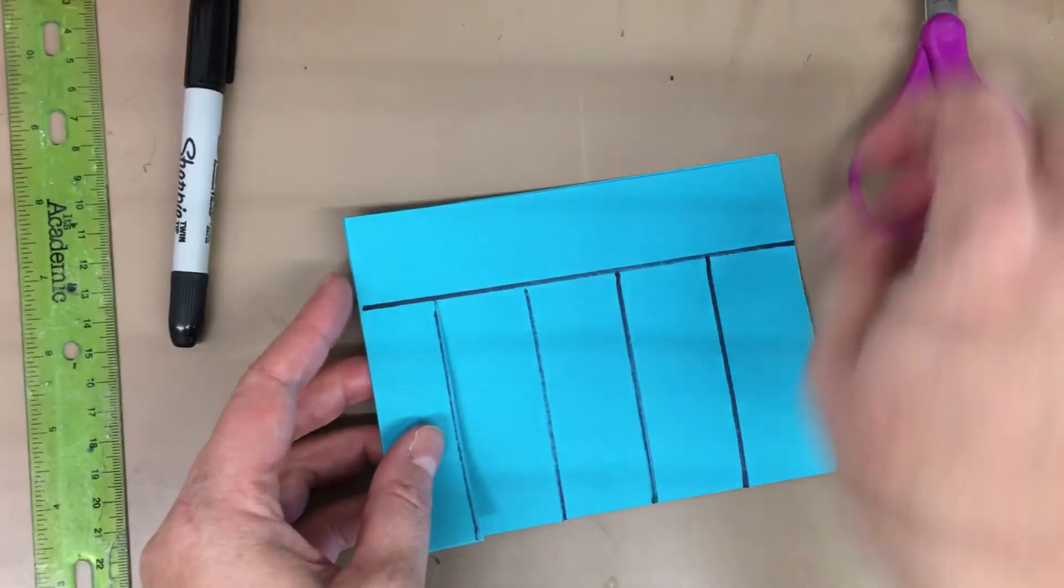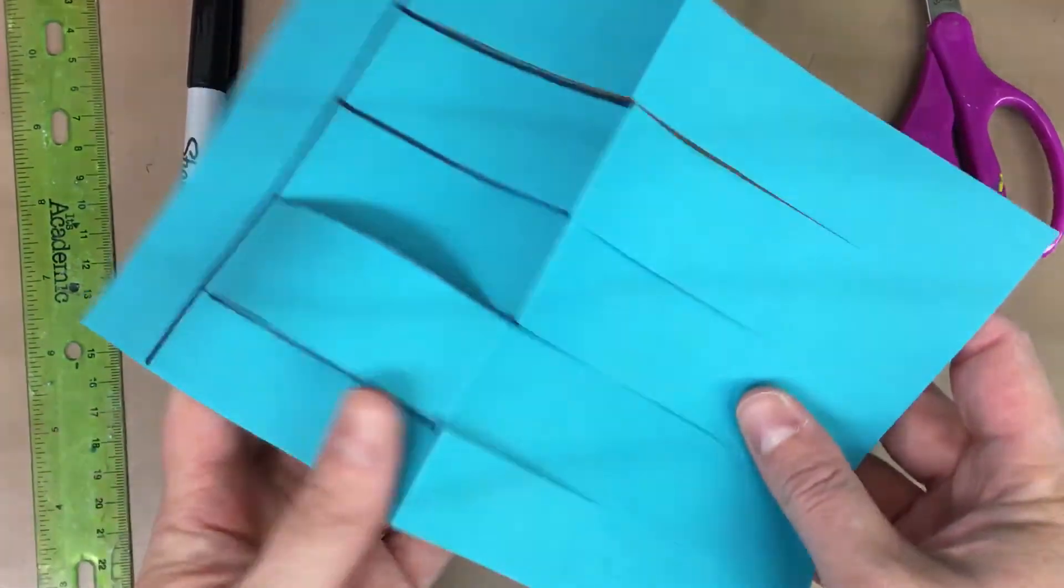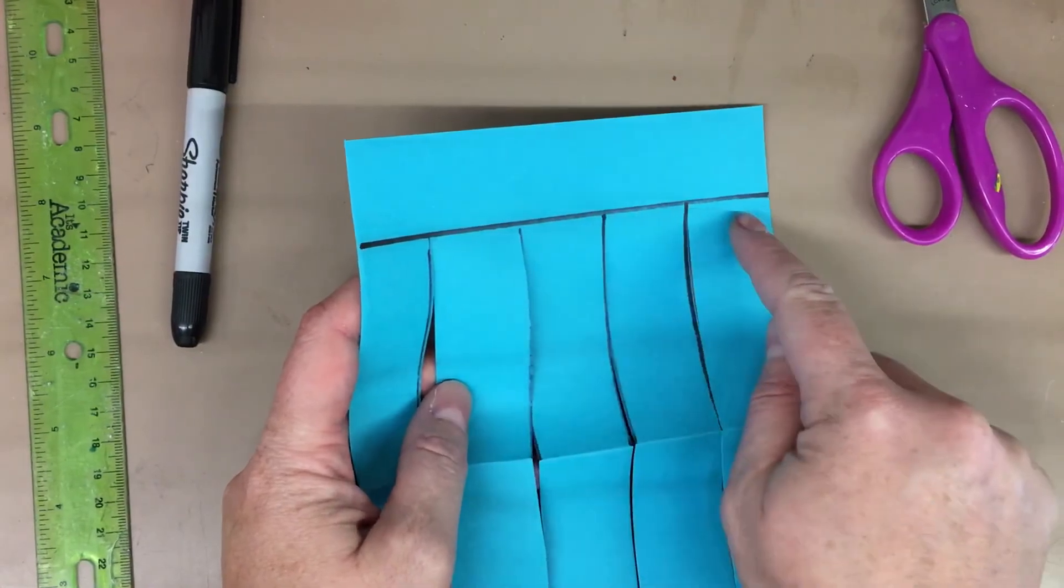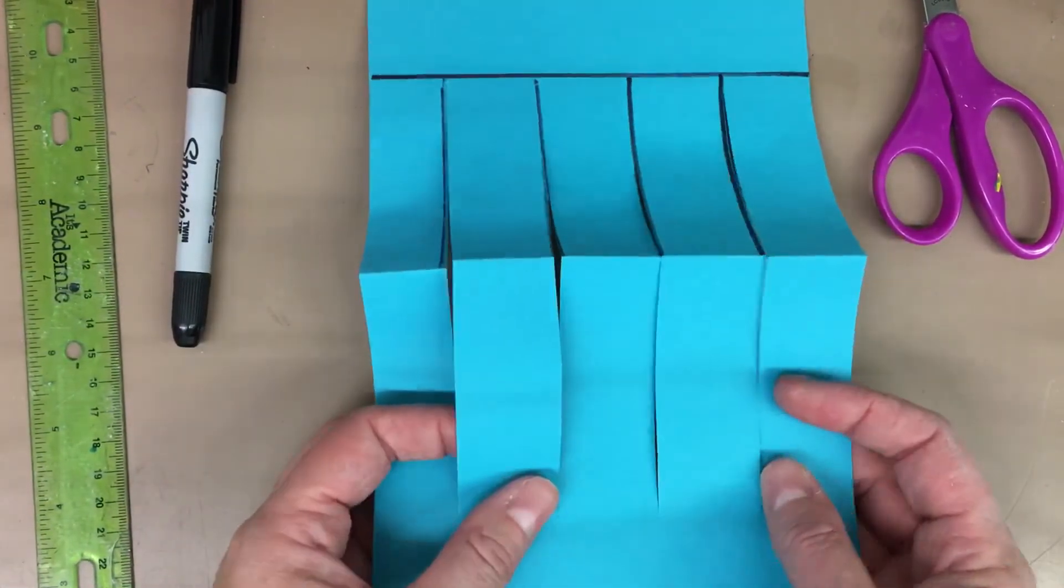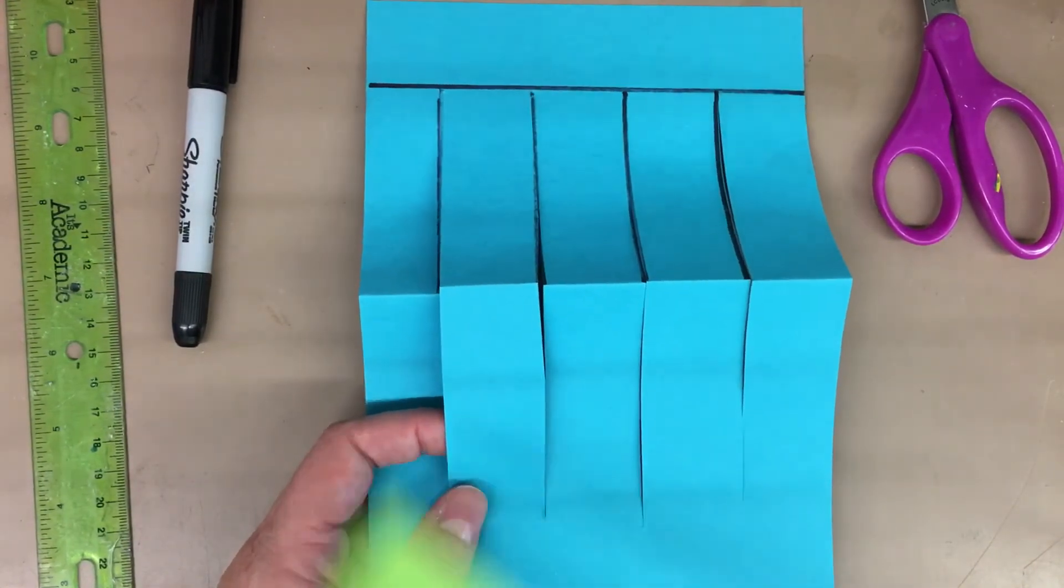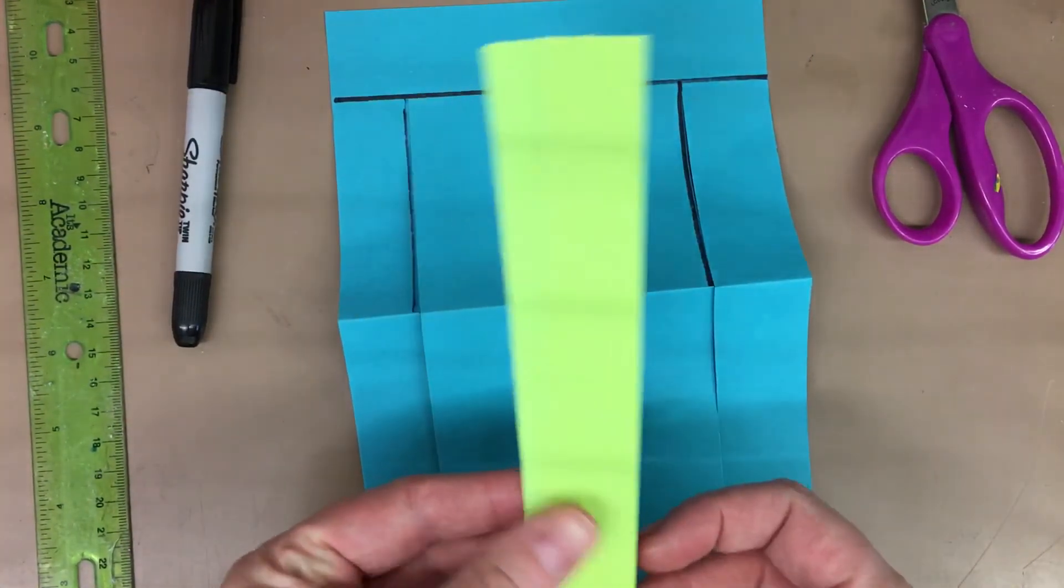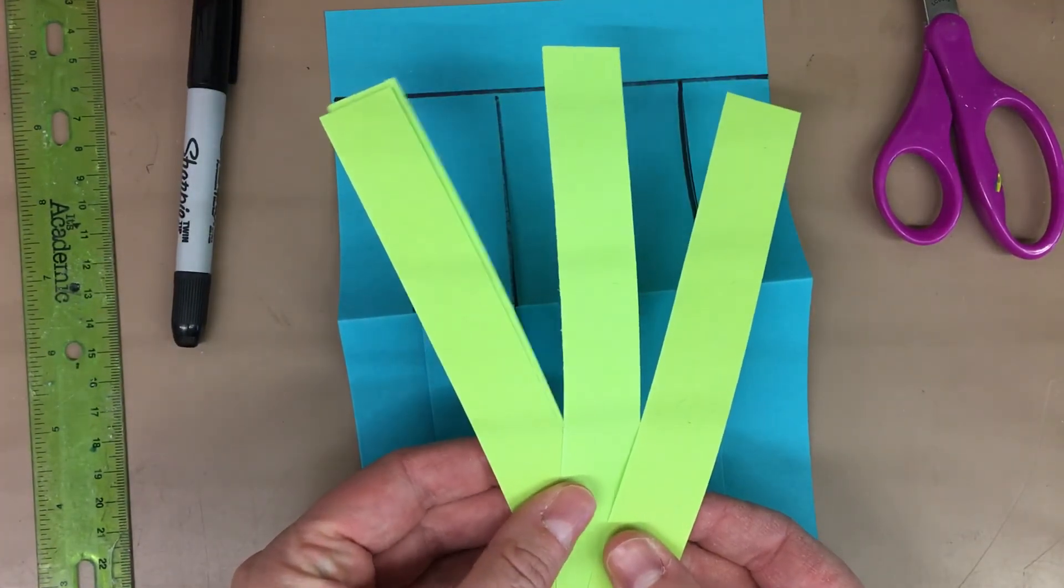So when I open this, all of my pieces are staying together, but I also have a start and a stopping point. That way I don't have to worry about my little pieces sliding out as I'm weaving with them. Okay, so I'm going to go ahead and show you how to do some weaving.